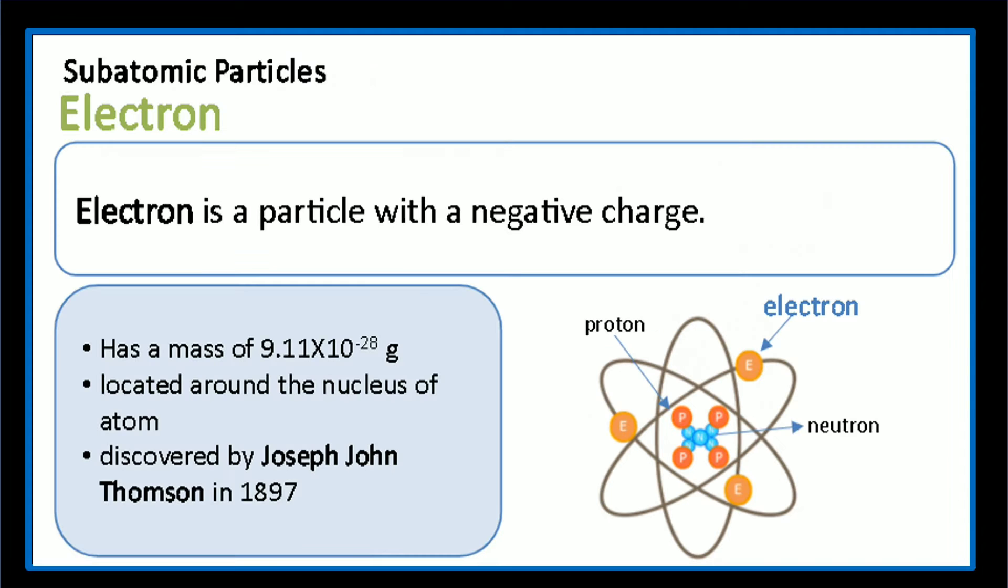An electron is a particle with a negative charge. It has a mass of 9.11 times 10 raised to negative 28 grams and it is located around the nucleus of an atom. It was first discovered by Joseph John Thompson in 1897.